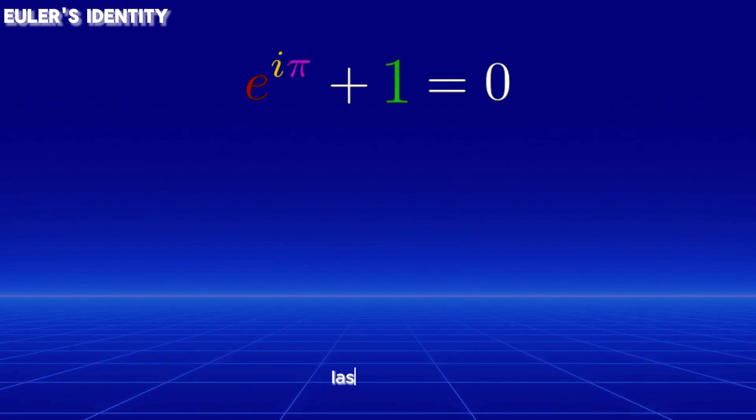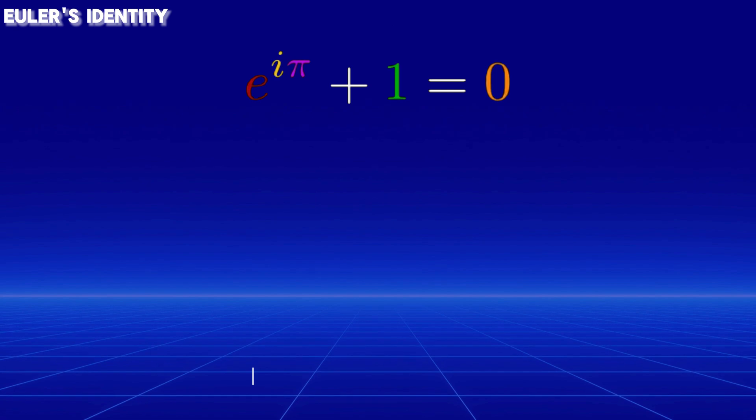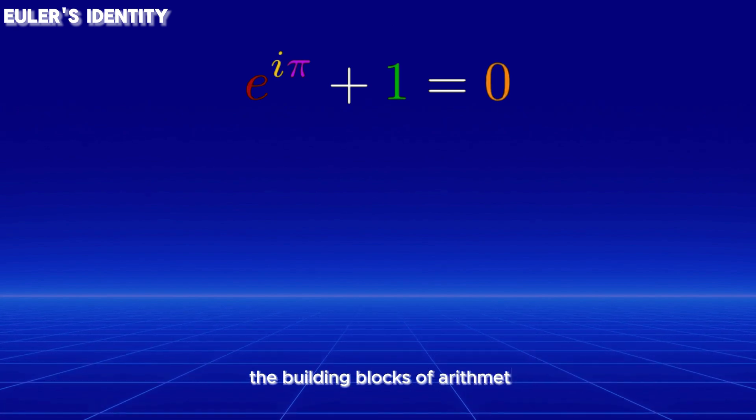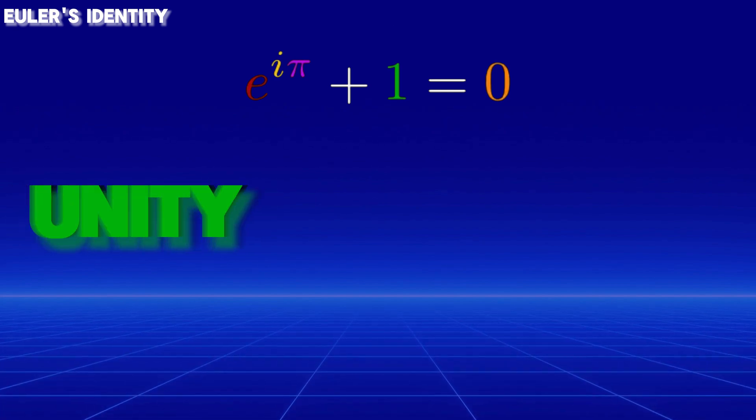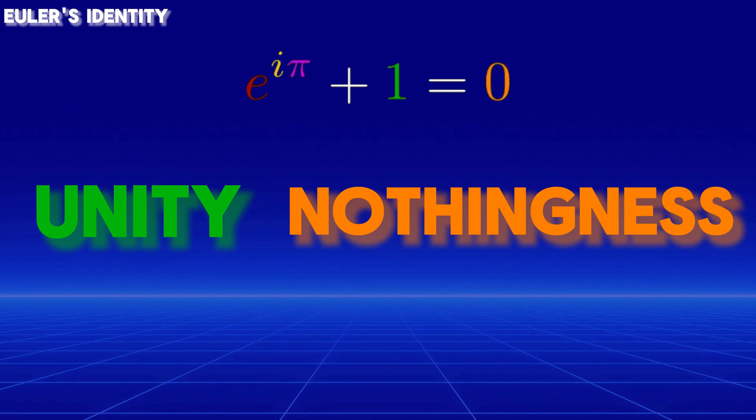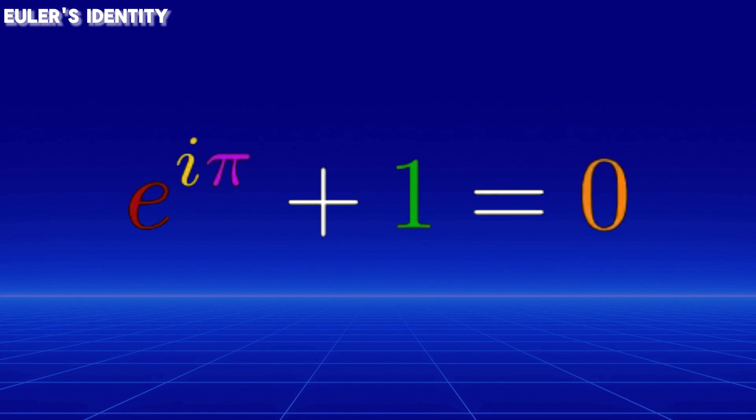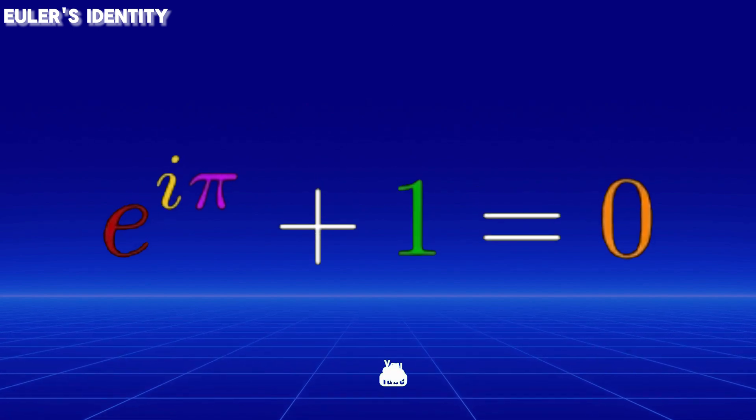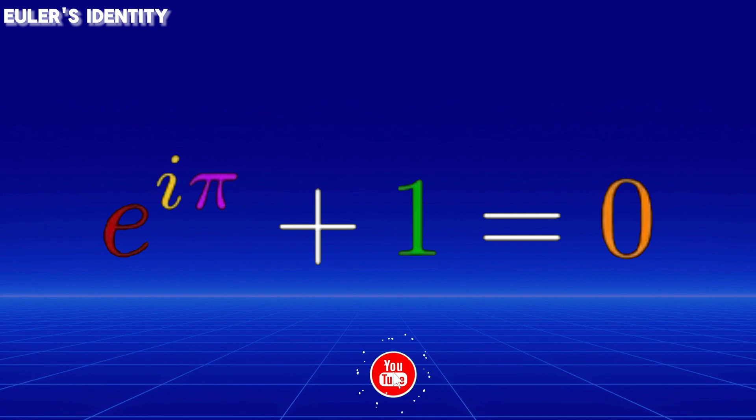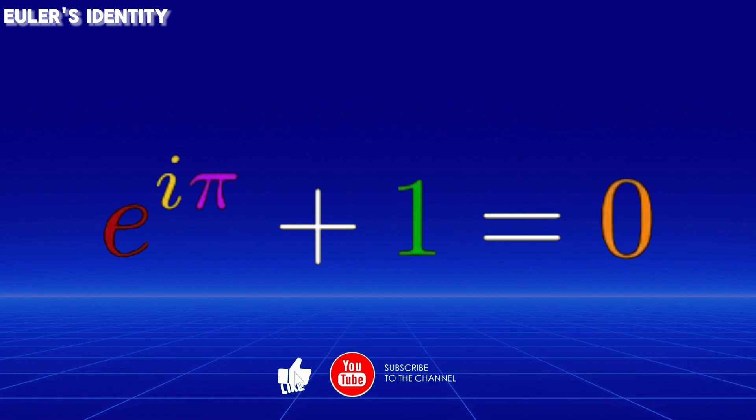Lastly, 1 and 0, the building blocks of arithmetic, representing unity and nothingness, respectively. These five constants each hold immense significance on their own, but Euler's identity brings them together in a way that is almost poetic.